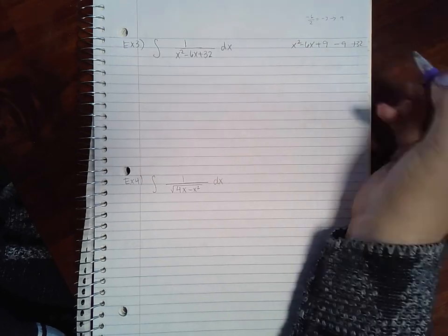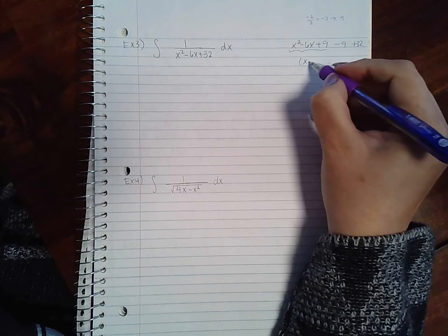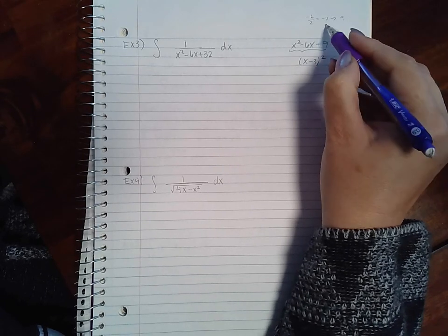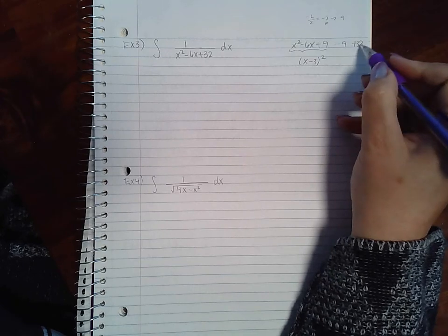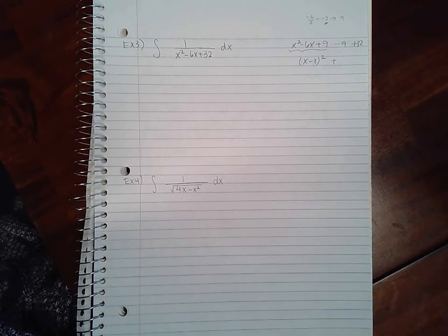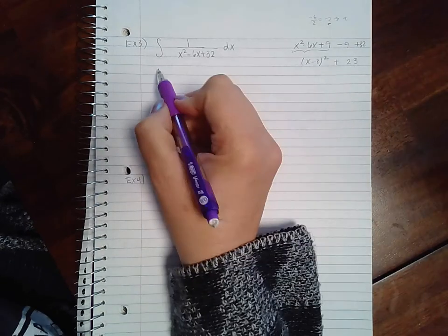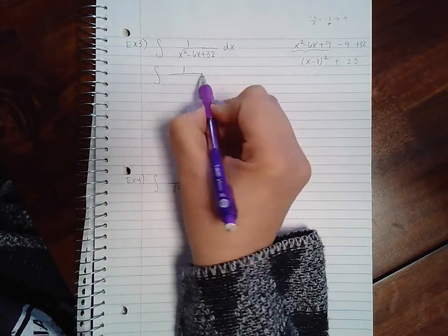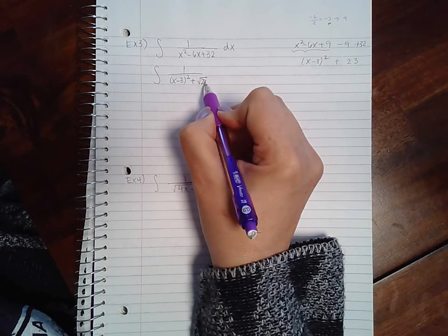Now that means here I get x minus three squared. Usually whatever you have here before you square it, and then negative nine and 32 is actually going to be 23. So then I can rewrite this integral as x minus three squared plus the square root of 23 squared.